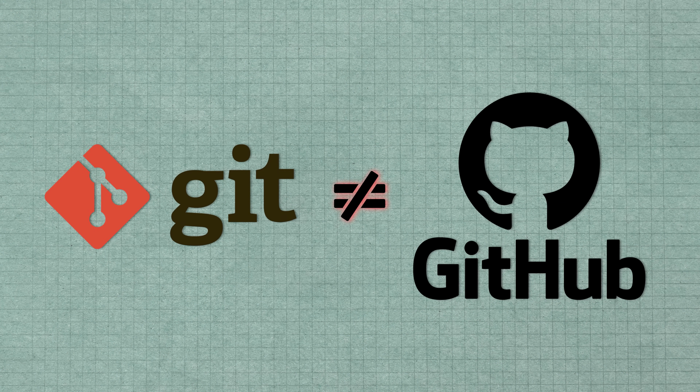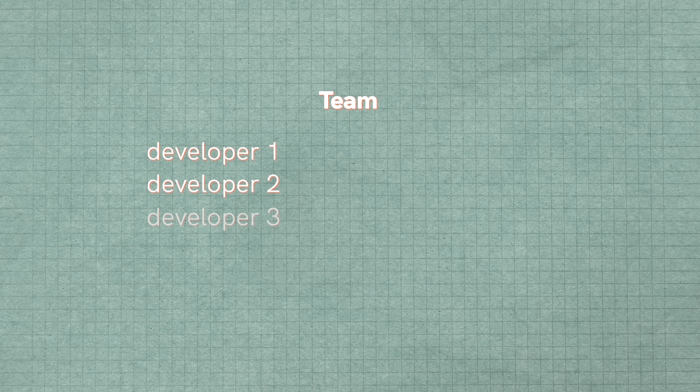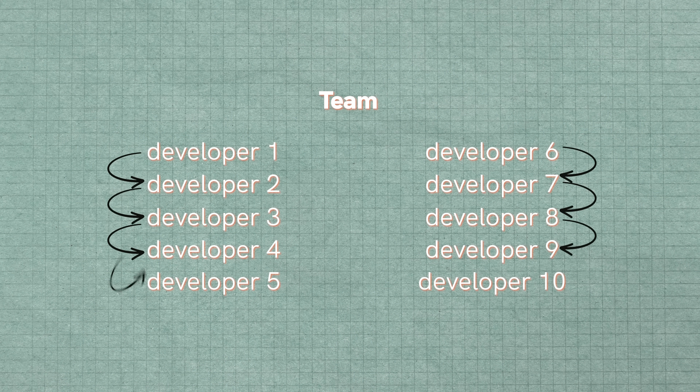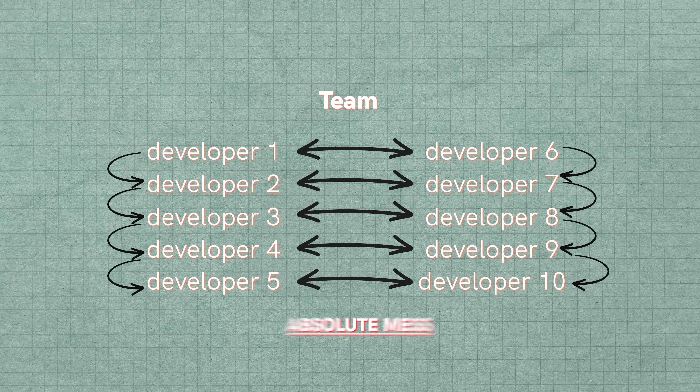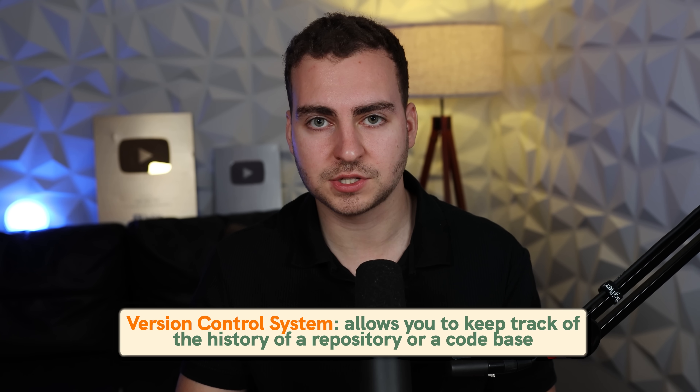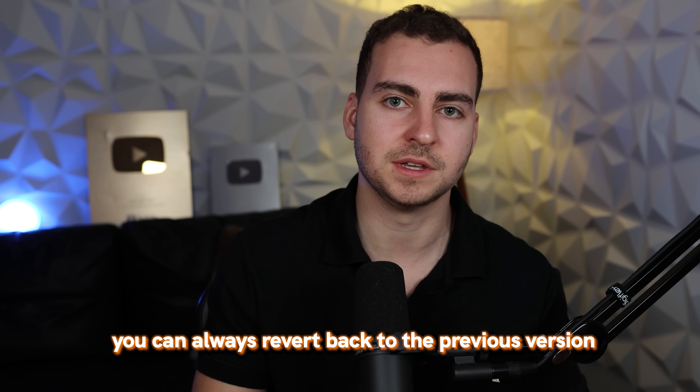The next tool that is so important to learn is version control — specifically Git and GitHub, which are different. When you're working with multiple developers, it can be very difficult to manage code. Without version control, a team of 10 developers would be constantly sending zip files and sharing different versions of code — an absolute mess. A version control system lets you keep track of the history of a repository or codebase, and you can use it independently to keep track of commits so that if something goes wrong, you can always revert back to a previous version.